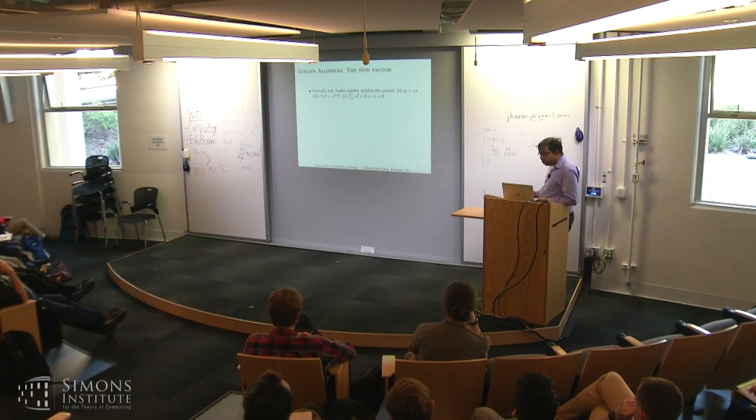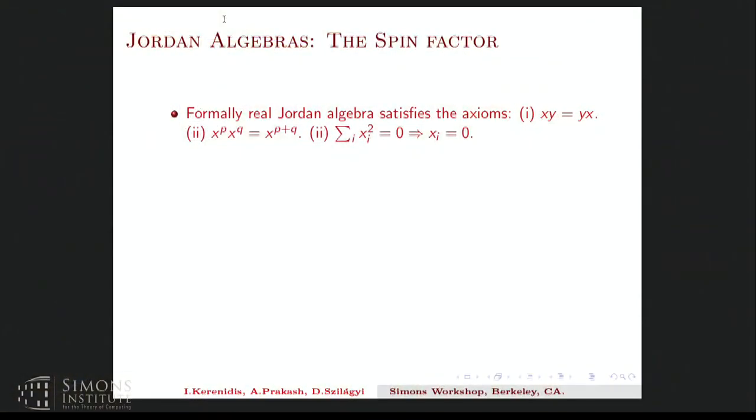Okay, so now I'll try to explain to you why SOCPs are an important problem in their own right, like they lie between linear and semi-definite programs. And I'll also talk a bit about Jordan algebras, which are used heavily in the analysis of SOCP IPMs. So Jordan algebras came from some problem in the foundations of quantum mechanics. And formally, they can be defined as an algebra satisfying these three axioms. So it's non-associative algebras, which is commutative, which is power associative, and which is formally real, meaning that if a sum of squares is zero, each of the terms has to be zero.